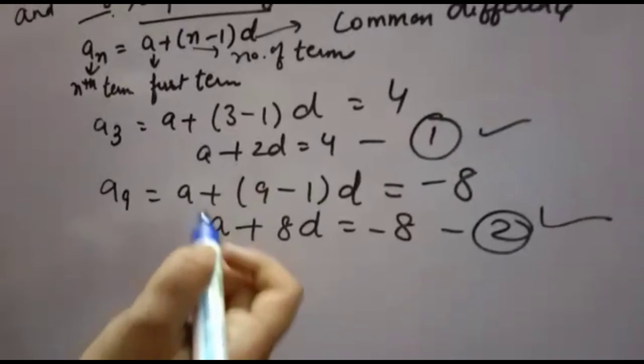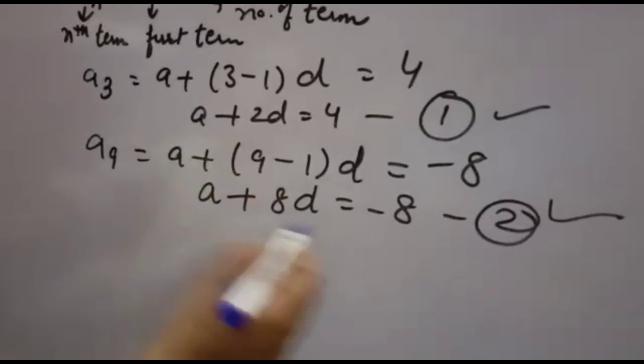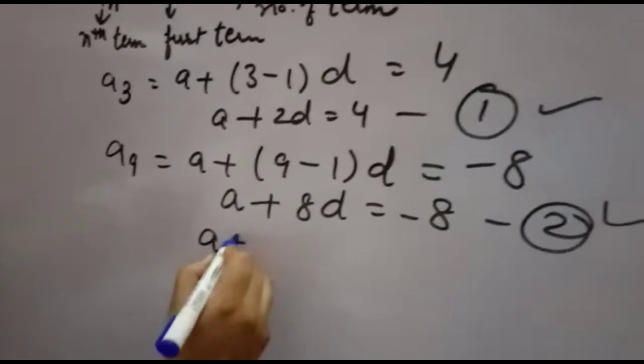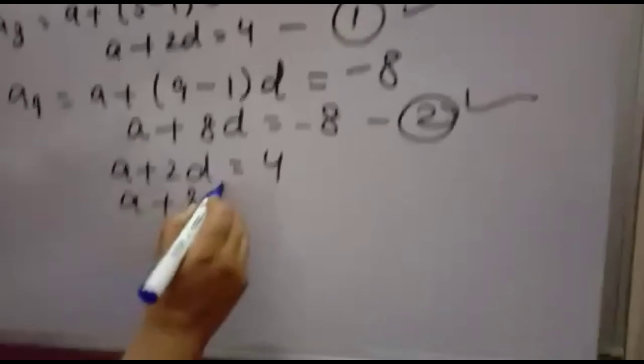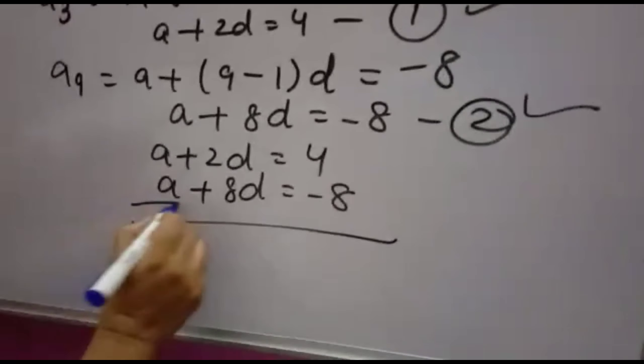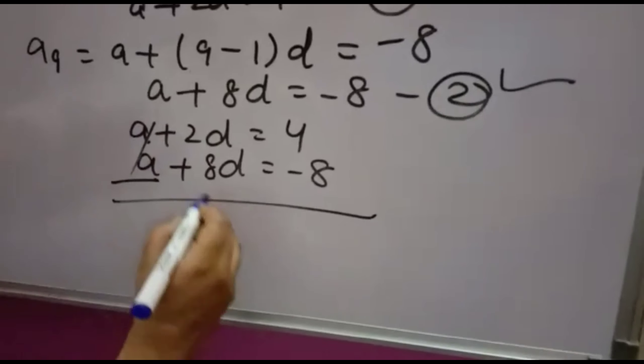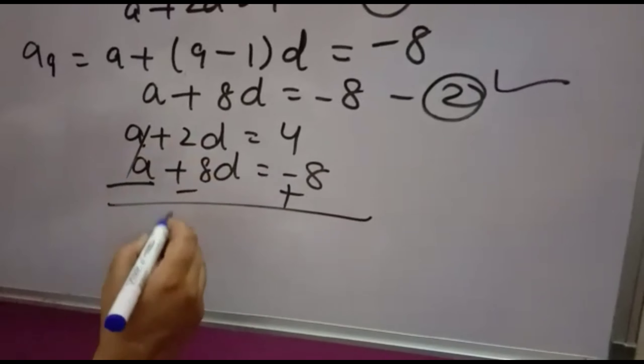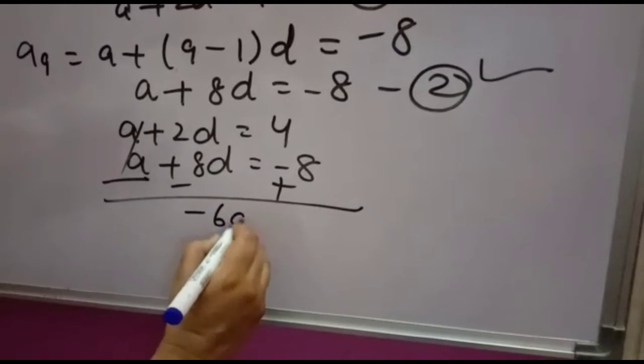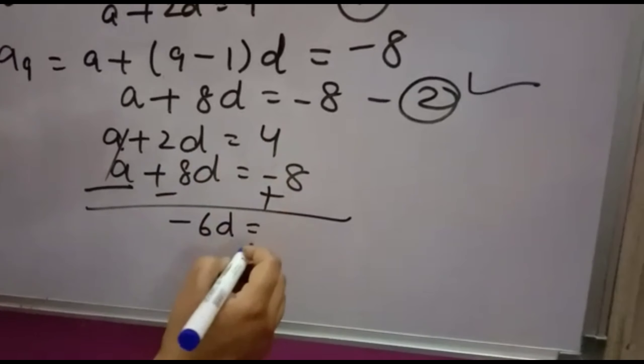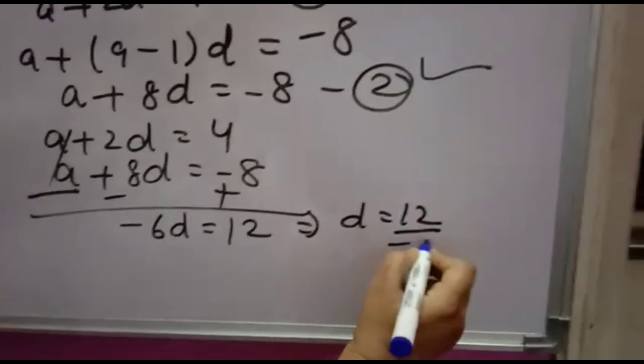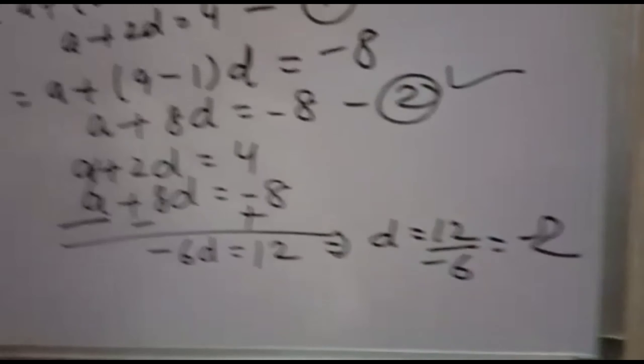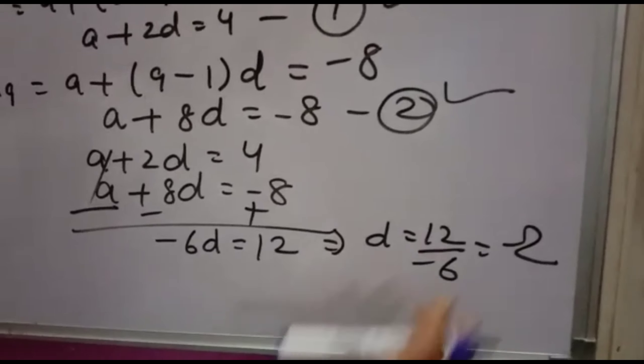We have two equations with two variables, so we'll solve using the elimination method. Subtracting equation 1 from equation 2: (A + 8D) - (A + 2D) = -8 - 4. This gives us 6D = -12, so D = -12/6 = -2.